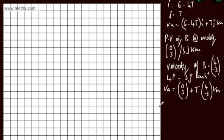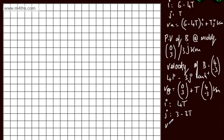Looking at the i components we get 4t, and the j components give 3 minus 3t. So we can write rB equals 4ti plus (3 minus 3t)j km. That is now rB.